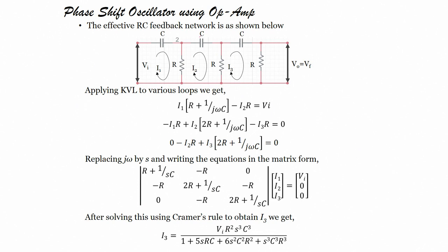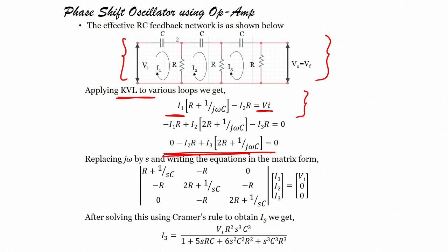The effective RC feedback network is shown in the figure. V_I is the input and V_O equals V_F. Applying KVL to the various loops, we get: I₁·(R + 1/jωC) − I₂·R = V_I. Solving this equation further yields a system of equations, and writing them in matrix form by replacing jω with S.